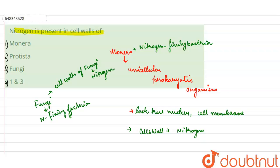So when we look into our options, the first option says Monera, so this is correct. Option 2 states Protista, which does not contain nitrogen in its cell wall. And option 3 says Fungi, which is also correct. So our correct option will be 4, which is 1 and 3.